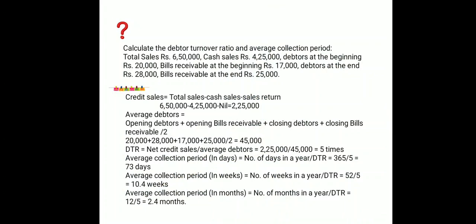Next we calculate average debtors. The formula is: (opening debtors + closing debtors) divided by 2. If we have bills receivable information, as in this question, it becomes: (opening debtors + opening bills receivable) + (closing debtors + closing bills receivable), all divided by 2. So: 20,000 + 17,000 + 28,000 + 25,000 divided by 2 gives average debtors of 45,000.